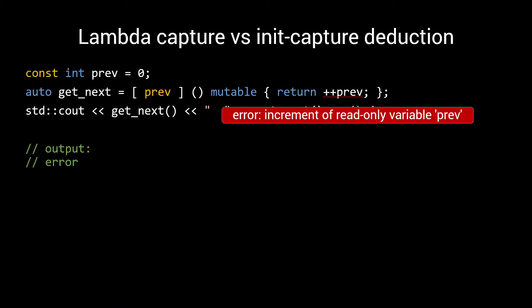I want to emphasize the difference between the value lambda capture and the value lambda init capture. This is the same get next lambda we saw before. We are using by value lambda capture, which follows template type deduction rules, but retains const and volatileness. As a result, pref is deduced to be a const int, resulting in an error when trying to increment.